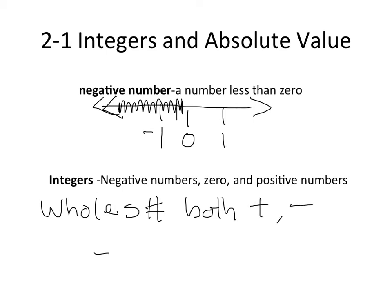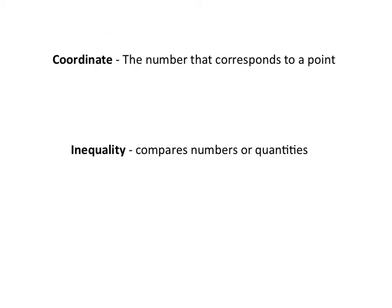An example of integers would be negative 1, negative 2, 0, 7, 100, and 10. The next key term is coordinate — the number that corresponds to a point. You'll see something like a point put on a number line. In this case, the point corresponds to the number, which is 1.